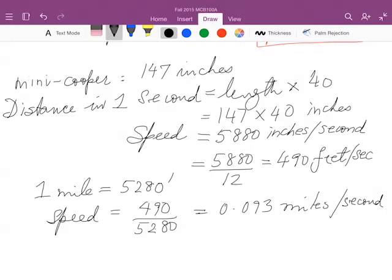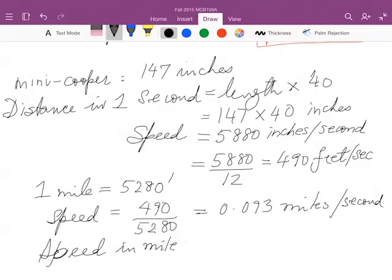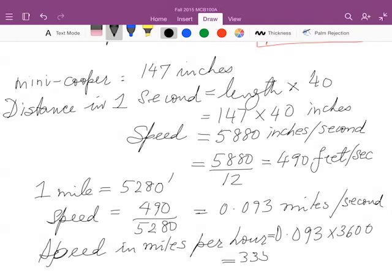To convert this to miles per hour, we multiply by 3,600. So the speed in miles per hour will be 0.093 multiplied by 3,600, because that's 3,600 seconds in an hour, which gives me this number, 335 miles per hour.